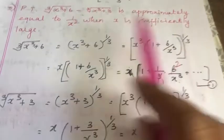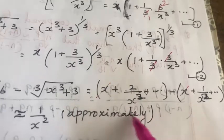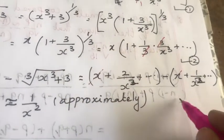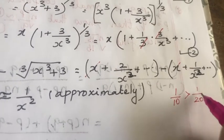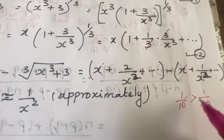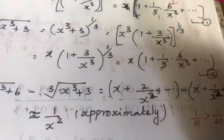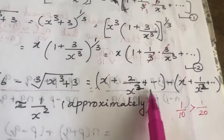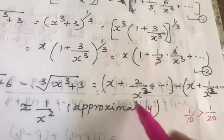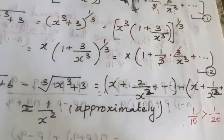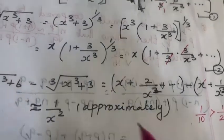When x is sufficiently large, if we have large values in the denominator, the value of the whole expression is small. Similarly, if we have large values in the denominator, the value of the whole fraction will reduce. Here x is sufficiently large, so when going to x², x³, x⁴ in the denominator, the value of the fraction will reduce. So this is approximately equal to 1/x², which is what we had to prove.